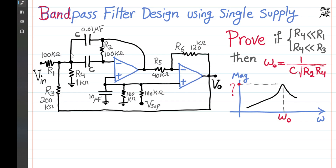A bandpass active filter is shown here, realized using two op-amps and only a single supply. We want to show that its magnitude response looks like this, with omega in radians per second on the x-axis. The center peak value of the magnitude response, omega naught, is equal to 1 over C times the square root of R2 times R4, given that R4 is considerably less than R3 and R1 — by a factor of 100.